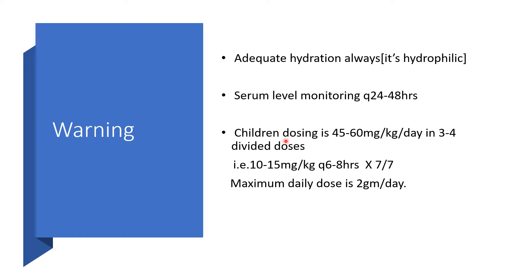Pediatric dosing: 45–60 mg/kg per day — note this is the total daily dose, divided into three or four doses. The likely per-dose amount is 10–15 mg/kg every 6–8 hours. The maximum daily dose is 2 grams per day.